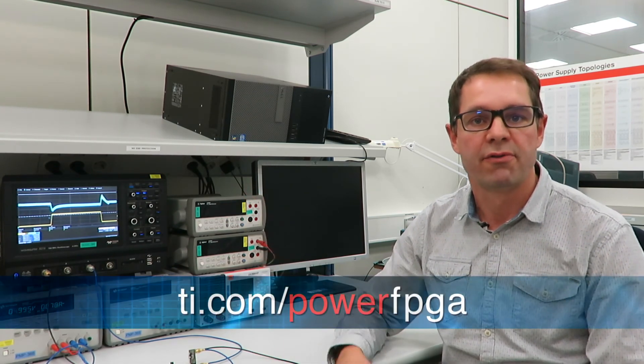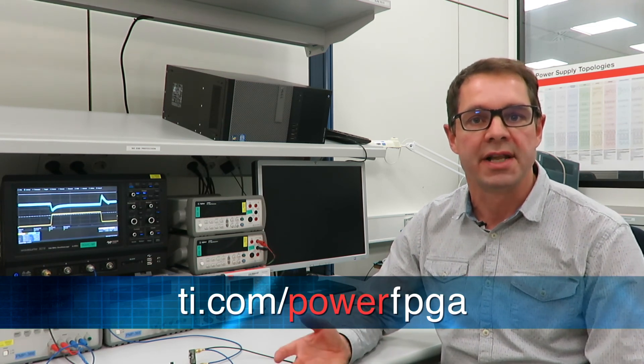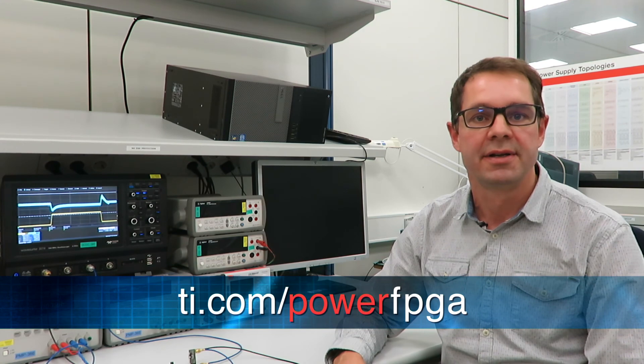Using a DC-DC converter with 1% feedback voltage accuracy as well as wide loop bandwidth reduces the external component count. For more information please visit us at ti.com/power-FPGA. Thanks for watching.